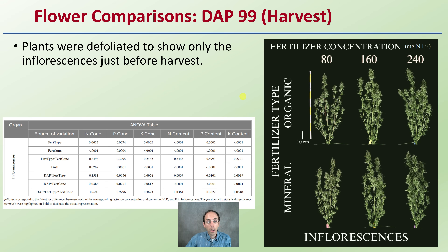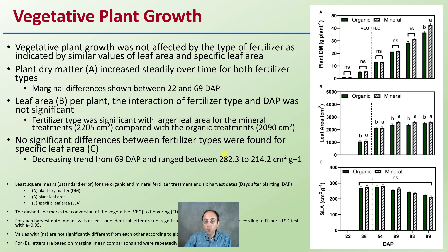Looking at vegetative plant growth: it was not affected by the type of fertilizer, as indicated by similar values of leaf area and specific leaf area. Where you see NS in the data table, that means no significant difference. Plant dry matter increased steadily over time for both fertilizer types, with only marginal differences shown between day 22 and day 69.